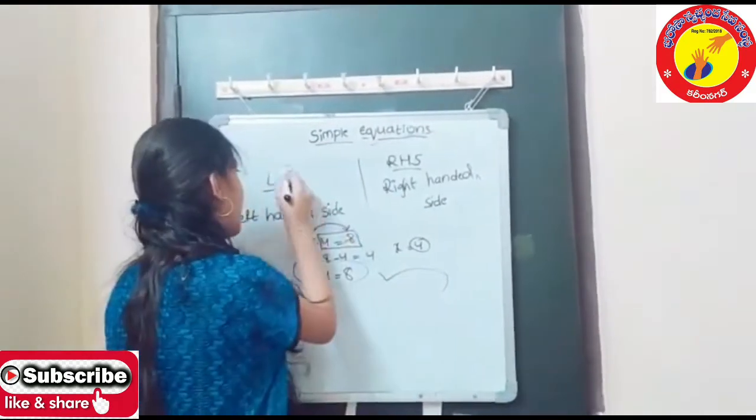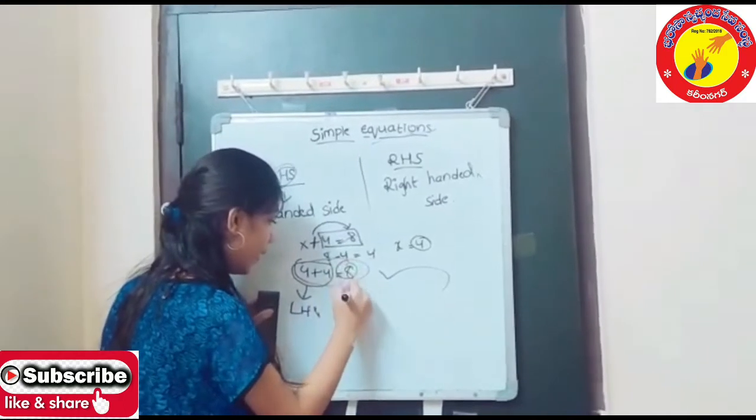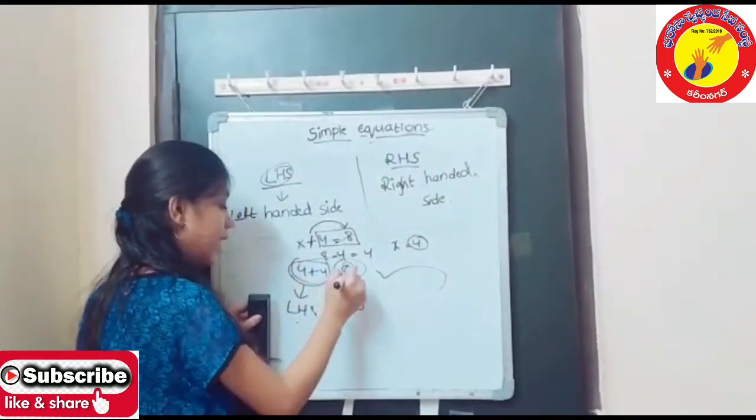This part is called LHS and this part is called RHS. The left side is called LHS and the right side is called RHS.